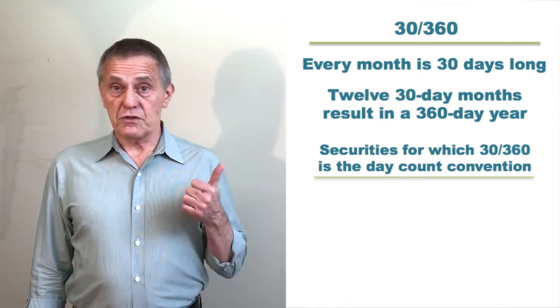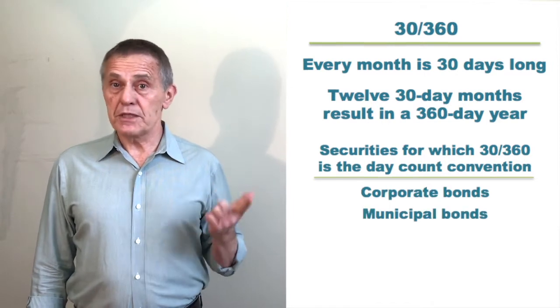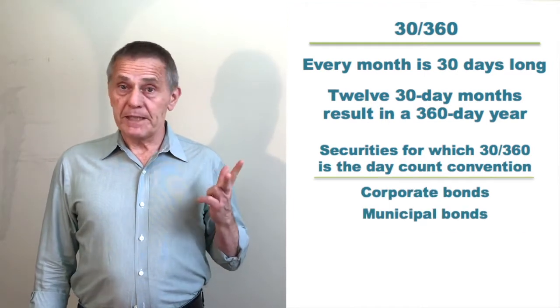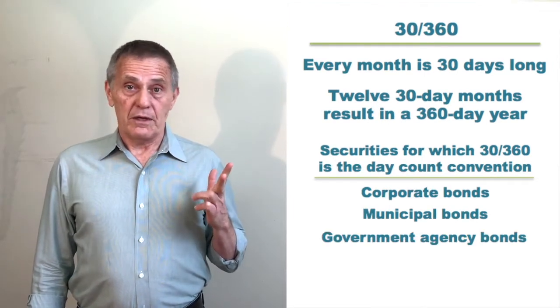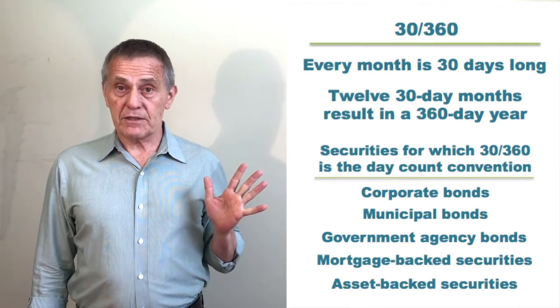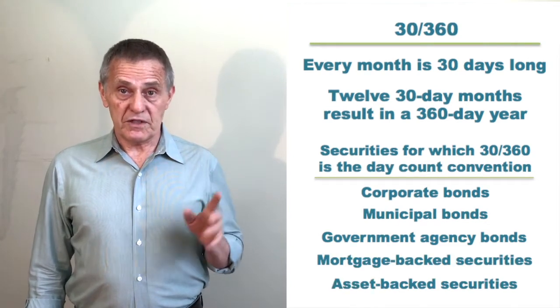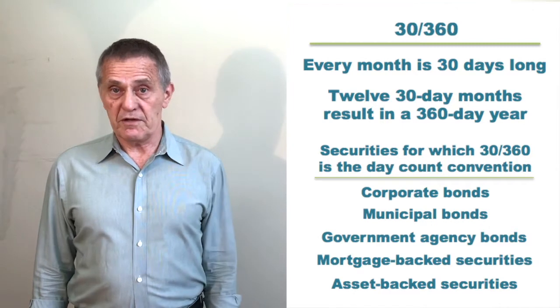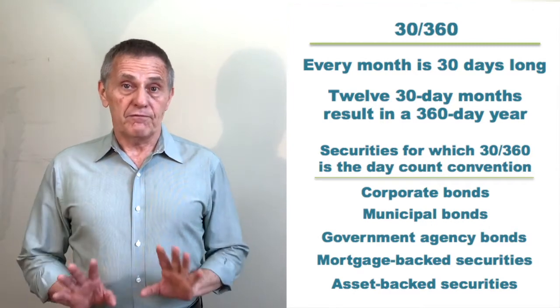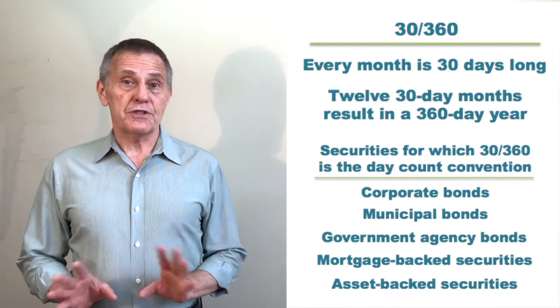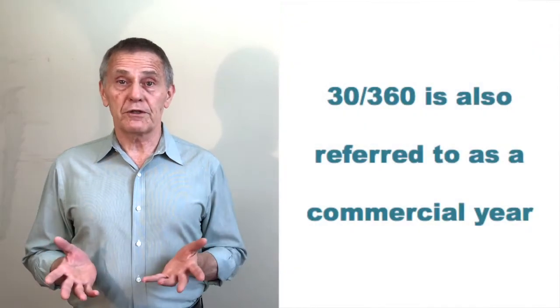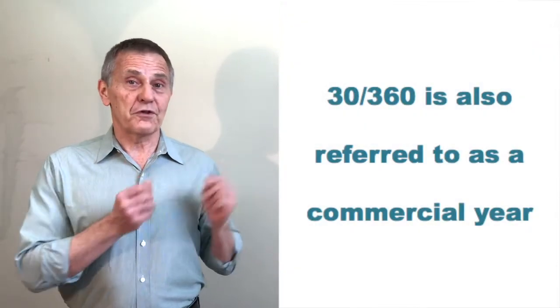So 30/360 is used for corporate bonds, municipal bonds, government agency securities, mortgage backs, asset backs. So the majority of different sectors use that 30/360 convention. And for what it's worth, sometimes you'll see books refer to a commercial year. That's code phrase for 30/360.